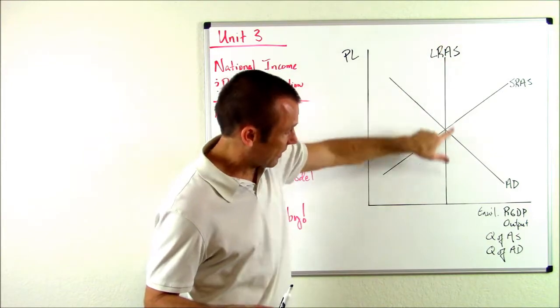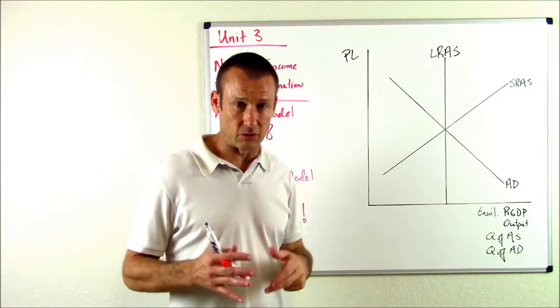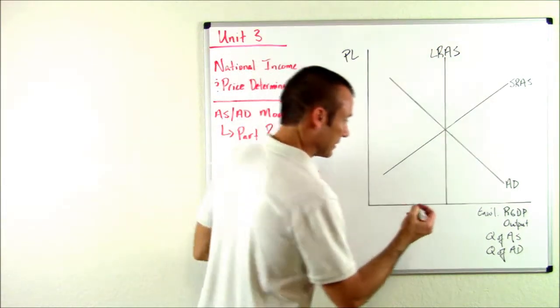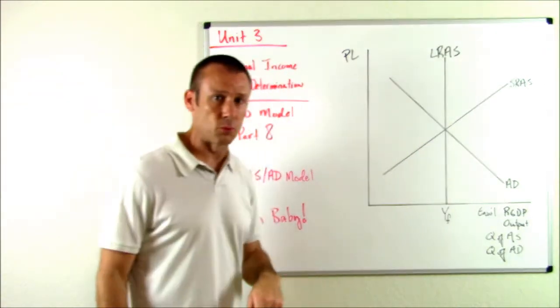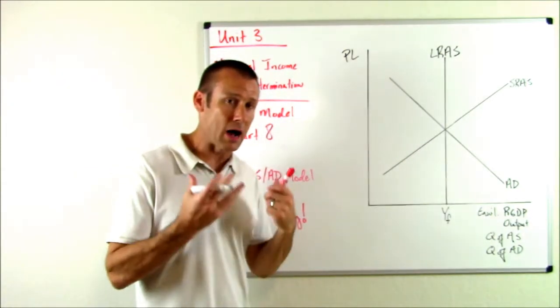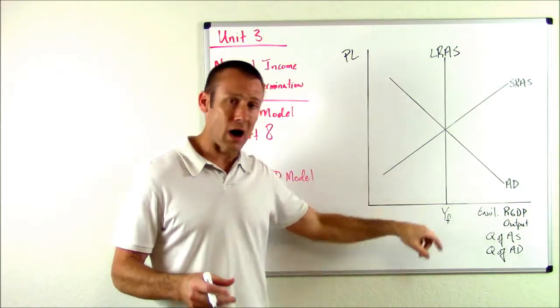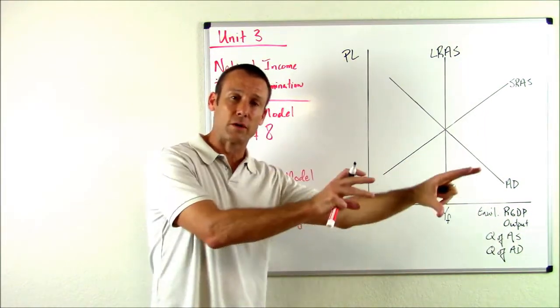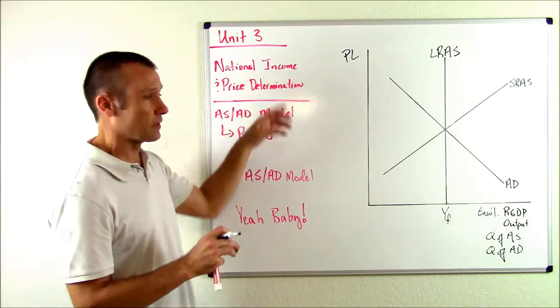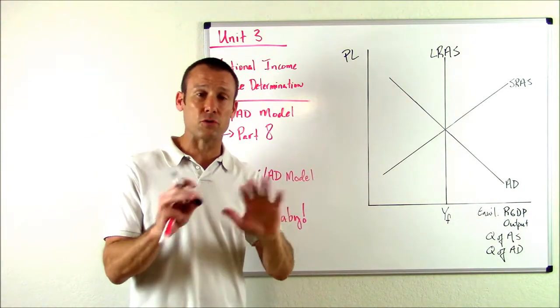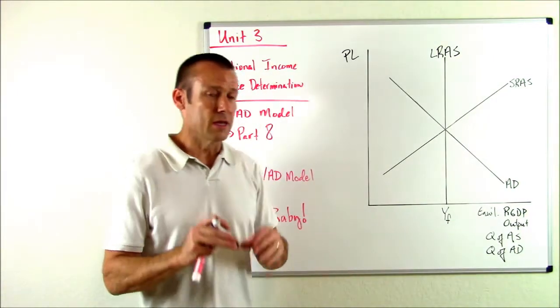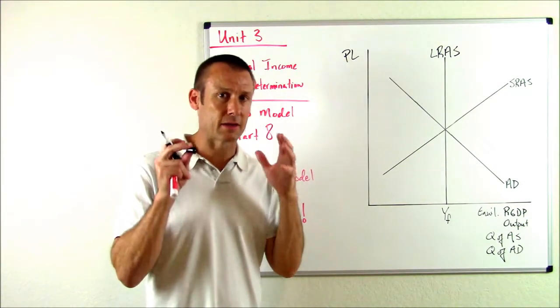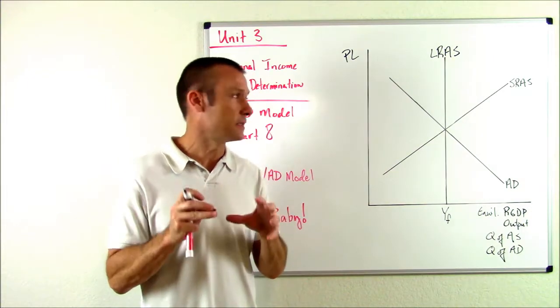Now next question: where is this LRAS curve anchored? One hundred percent of the time it is anchored at full employment, full employment national income. Remember, national income and real GDP, we can use those synonymously. So there's my full employment output.